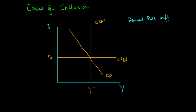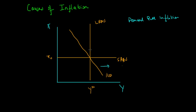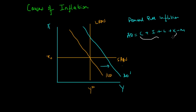Inflation is pulled upwards — think of a hand grabbing the short-run aggregate supply curve and pulling it upwards, and this is caused by a shift to the right of the aggregate demand curve. As we know, aggregate demand is C plus I plus G plus X minus M. Any increase in the components from C to X, or a decrease in imports, would cause aggregate demand to increase.